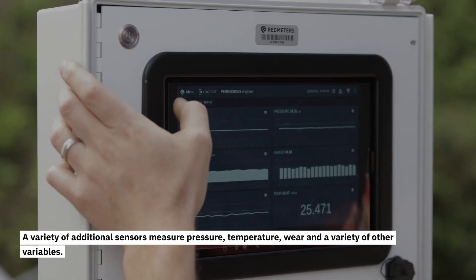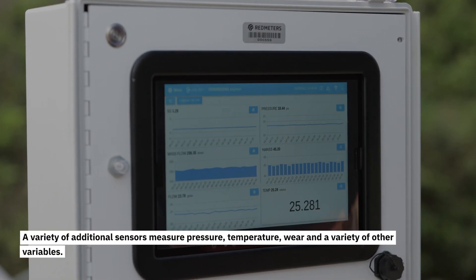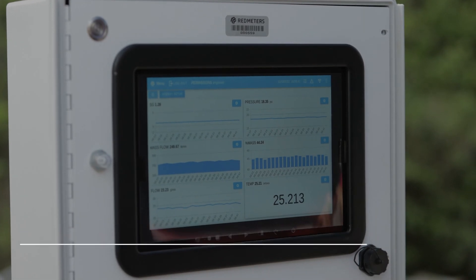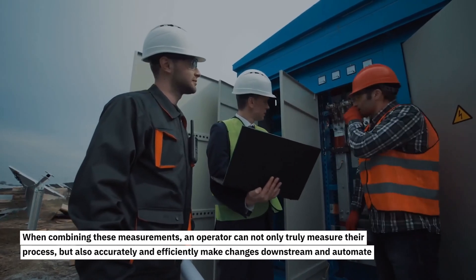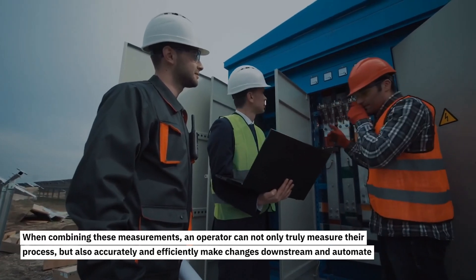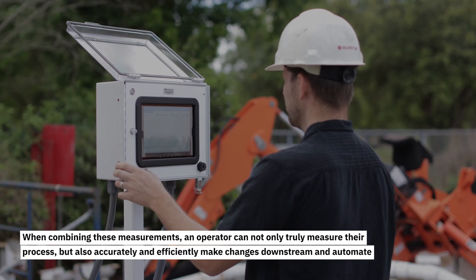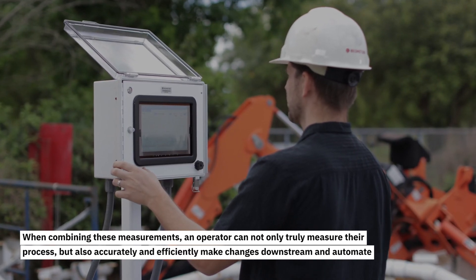A variety of additional sensors measure pressure, temperature, wear, and a variety of other variables. When combining these measurements, an operator can not only truly measure their process, but also accurately and efficiently make changes downstream and automate troubleshooting.